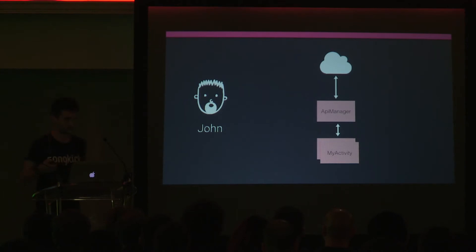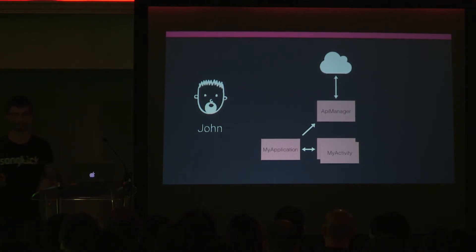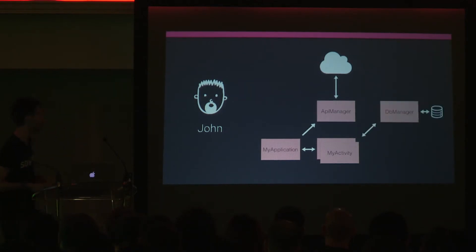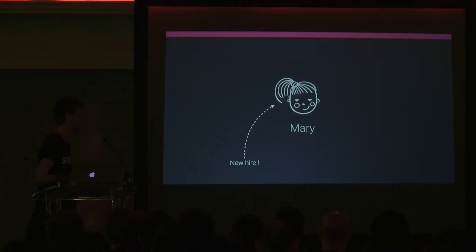Everything goes smoothly. Then he adds a second screen — same implementation, everything goes right. Then he wonders: my API manager code is repeated in both activities, so why not put it in the Application? He finds out every activity has access to the Application and he can have a singleton there. Then at some point he needs persistence on one screen, so he creates a DB manager. The DB manager communicates with SQLite — no need to put that in the Application since it's only needed in one activity.